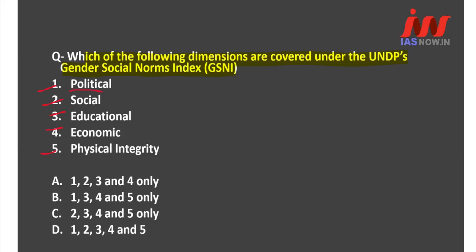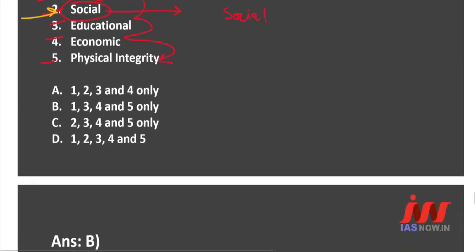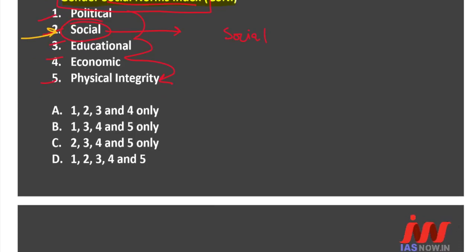Except Social, all four — Political, Educational, Economic, and Physical Integrity — are covered under UNDP's Gender Social Norms Index. So options 1, 3, 4, and 5 are correct, making option B the right answer for this question.